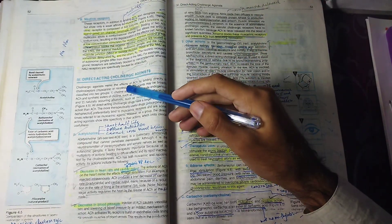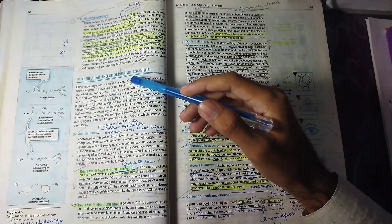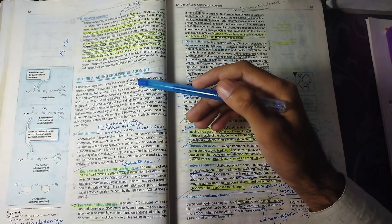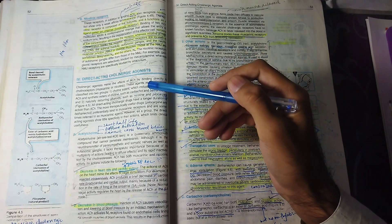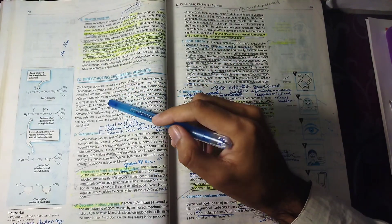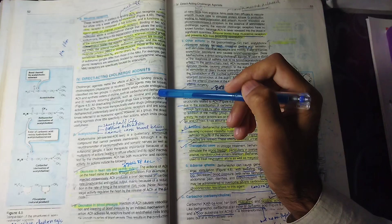One group is called Choline Esters. Choline Esters include acetylcholine, which are esters of choline, carbachol, and bethanechol. The other group is naturally occurring acetylcholine alkaloids: nicotine and pilocarpine. The structure is shown here.